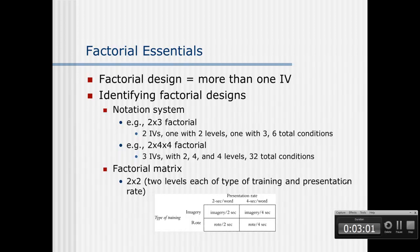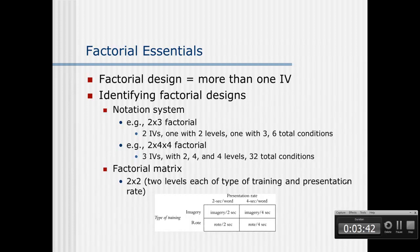We read the x in factorial notation as 'by,' so we say 2 by 3 and 2 by 4 by 4. However, the x actually refers to multiplication, coming from the statistics used to analyze these designs. To find how many conditions are in a factorial design, you multiply: 2 times 3 is 6, so in a 2 by 3 factorial there are 6 conditions. Similarly, 2 times 4 times 4 is 32, so a 2 by 4 by 4 factorial has 32 conditions.